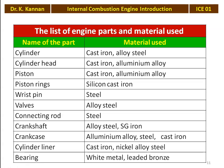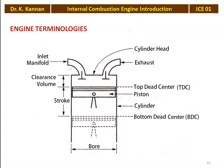The engine parts and materials used for manufacturing: the cylinder may be cast iron or alloy steel depending on the power and type of fuel. The cylinder head is cast iron or aluminium alloy. The piston is cast iron or aluminium alloy. The piston ring is silicon cast iron. The wrist pin is steel. Valves are alloy steel. The connecting rod is steel. The crankshaft is alloy steel or SGI iron. The crankcase is aluminium alloy or cast iron. The cylinder liner is cast iron or nickel alloy steel. Bearings are white metal or leaded bronze.